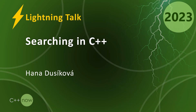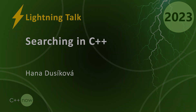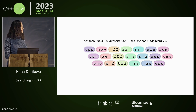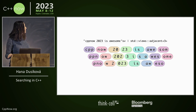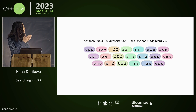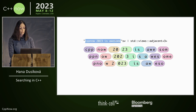I'm Hanna and I'm going to talk about searching in C++. You can see simple code which is string_view, and using hsnt view. It will give you ngrams, which is more like this.